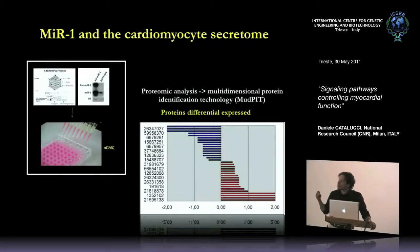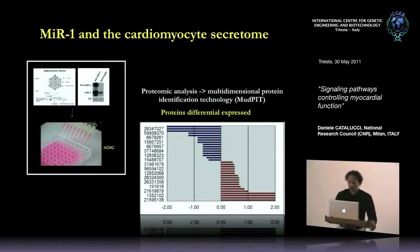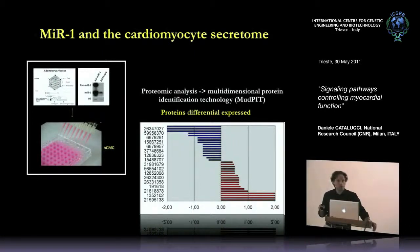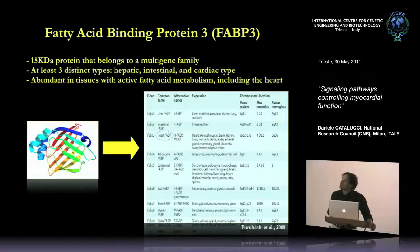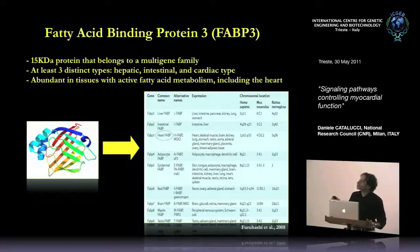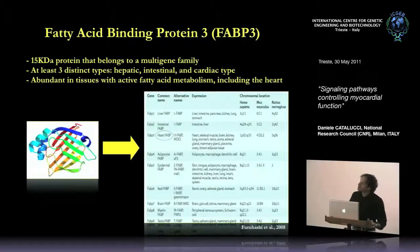We performed a differential analysis comparing the supernatant from cells infected by adenovirus expressing microRNA-1 versus a control adenovirus. Among the differentially expressed proteins, we searched for those predicted to be targets of microRNA-1. One protein that took our interest was fatty acid binding protein 3 — FABP3 — because it is heart-specific.